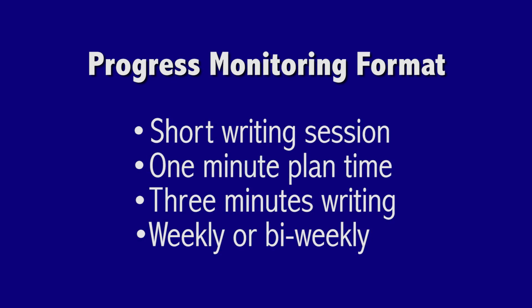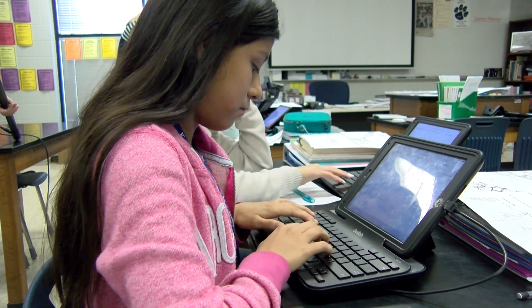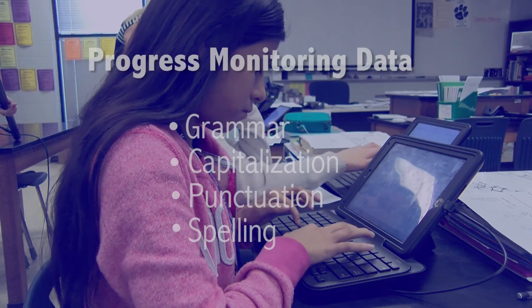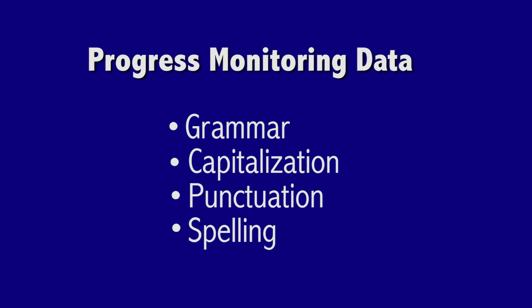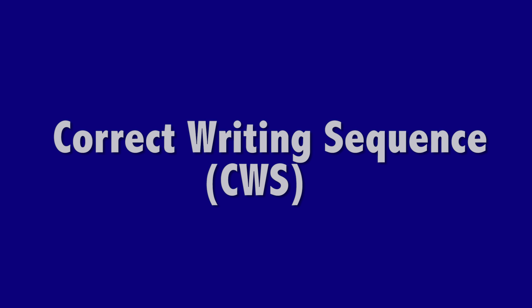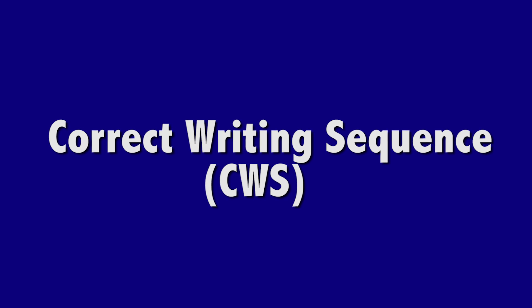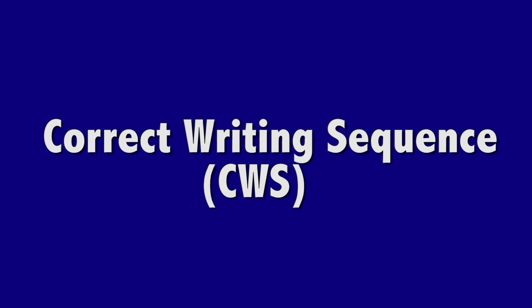Progress monitoring is a short writing session that provides data in a way to consistently measure goal benchmarks. The format is the same for each sitting, and the student writers become comfortable with the task after a couple writings. The short write yields accuracy data for grammar, capitalization, punctuation, and spelling in a score called a correct writing sequence.